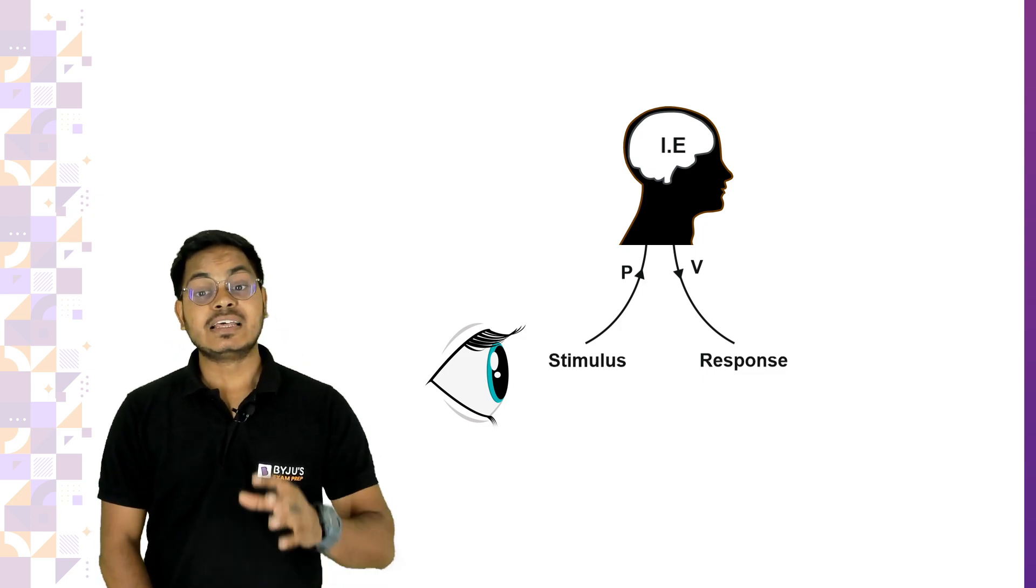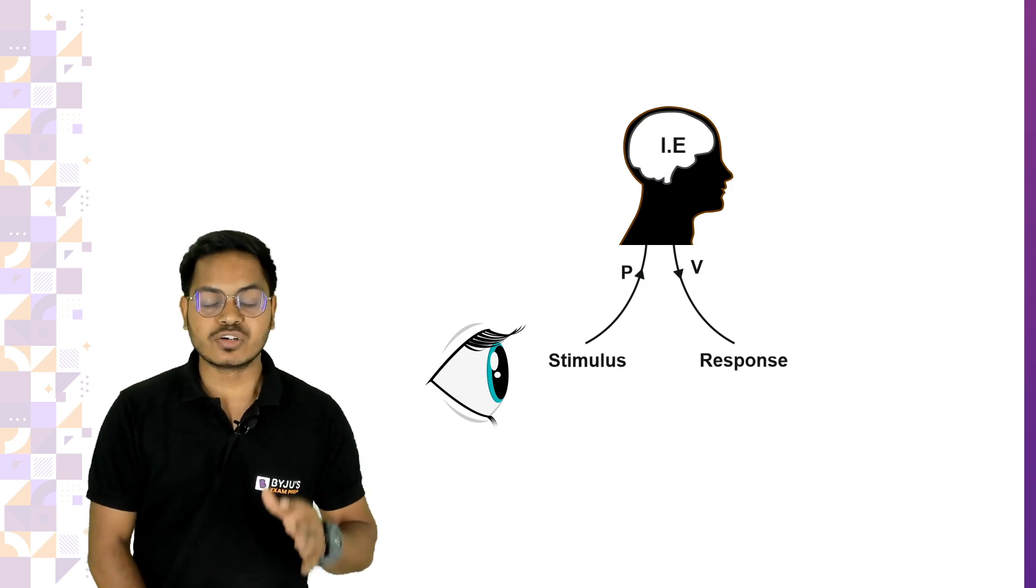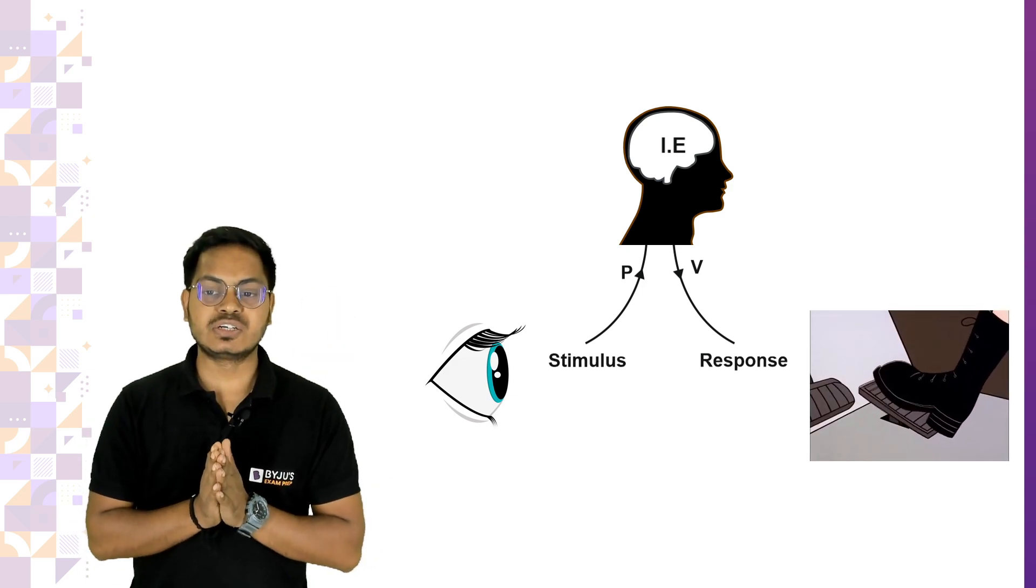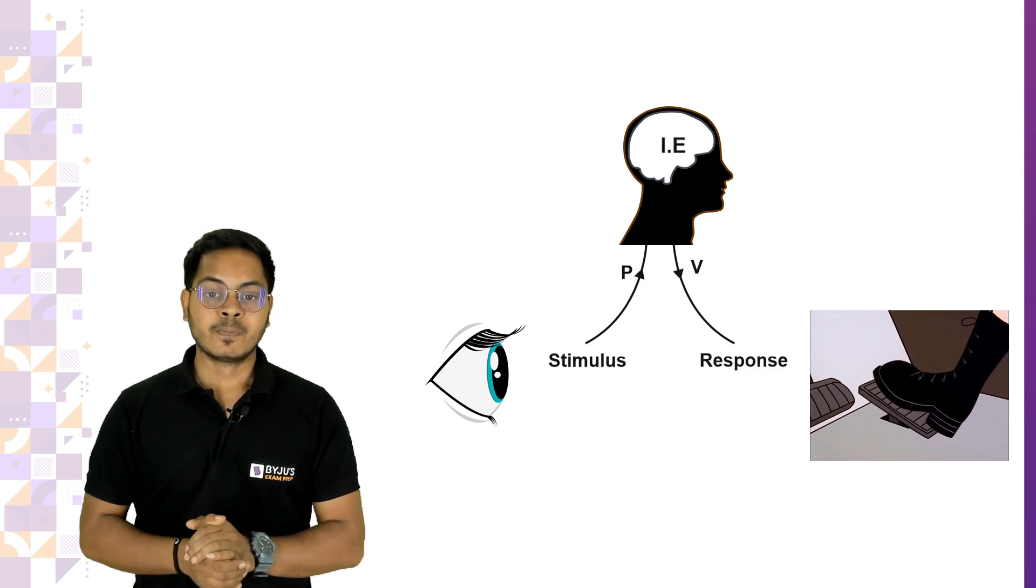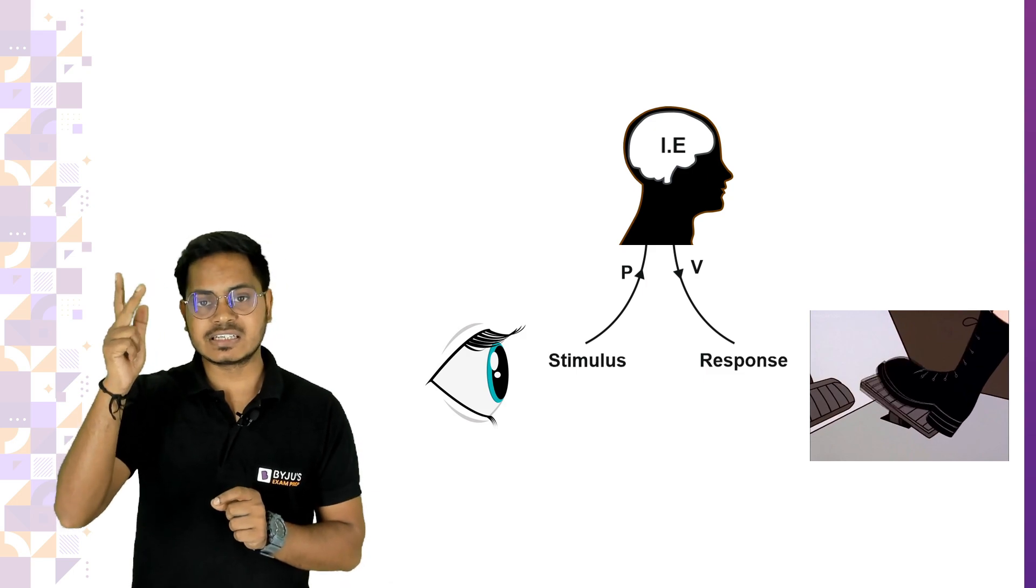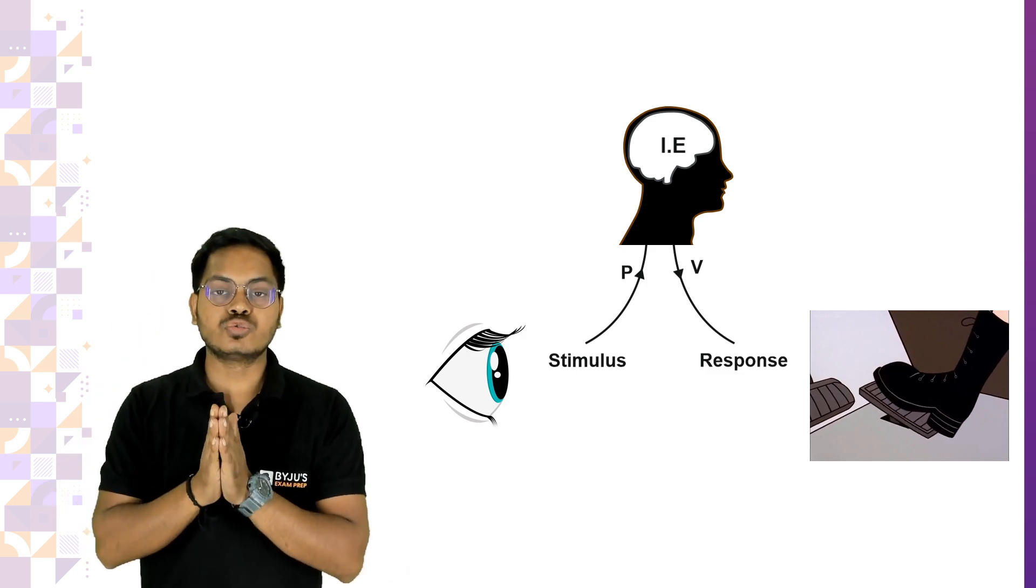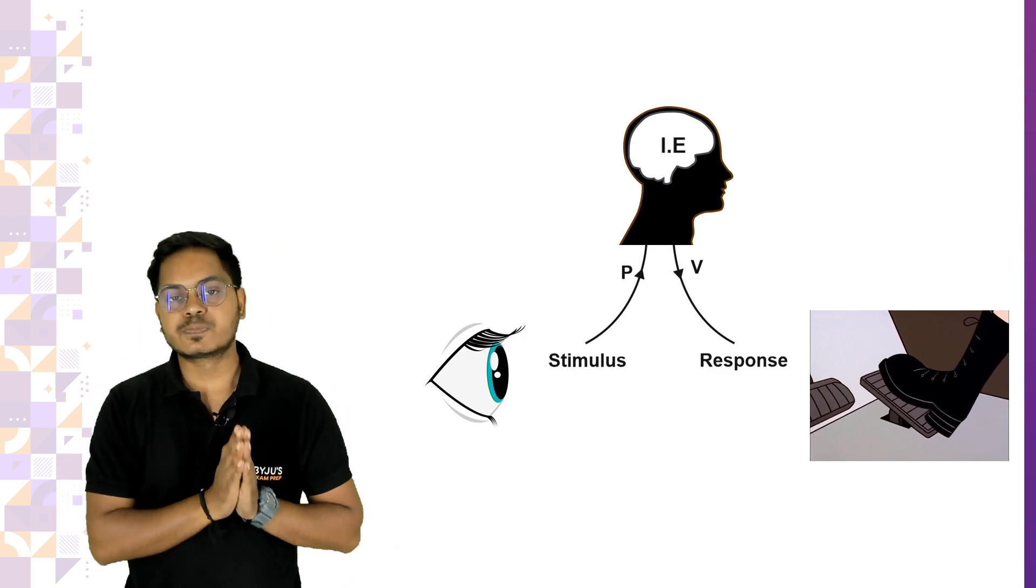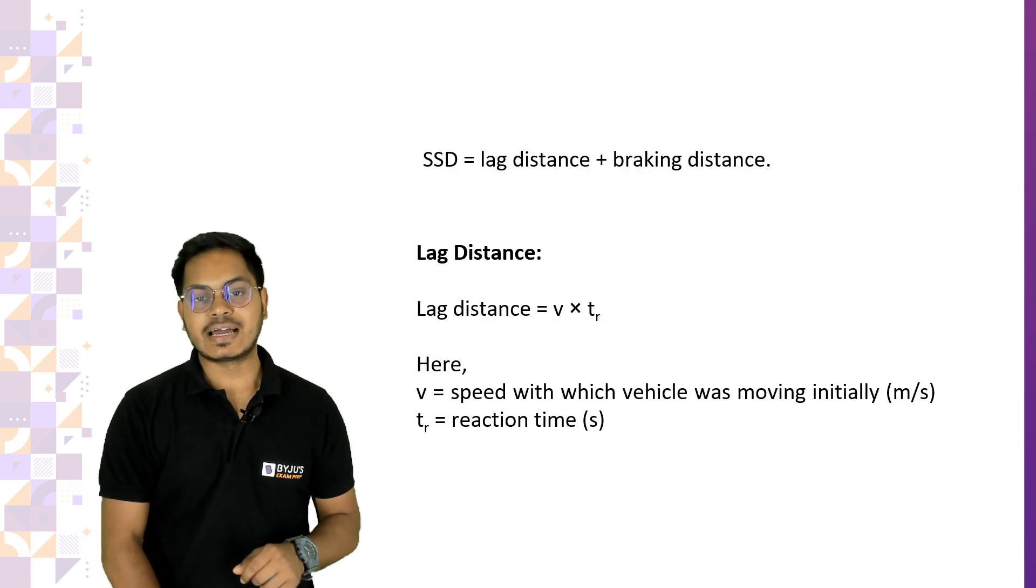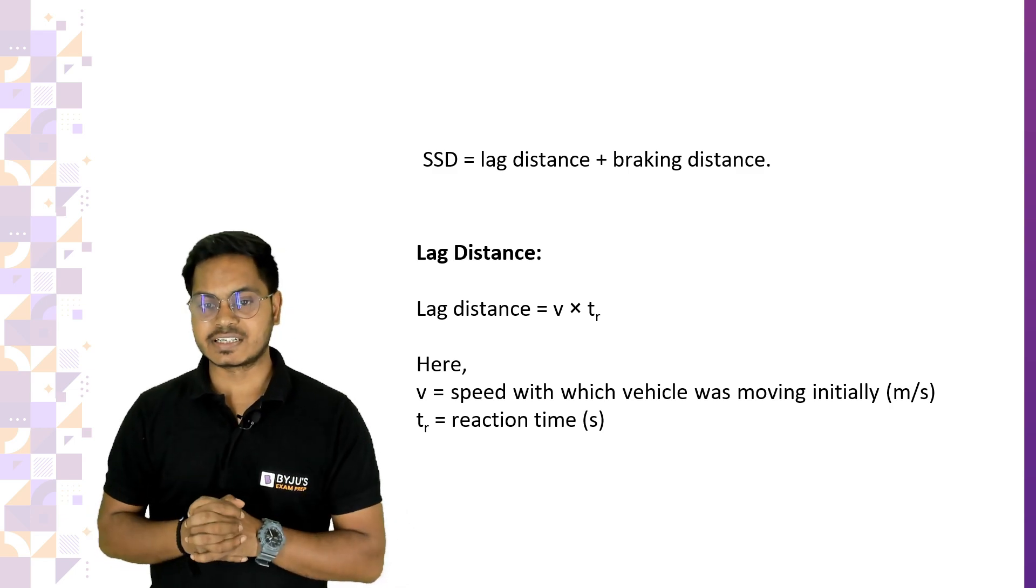then you get emotions around it. Once you get the emotion, you make the decision, yes, I'm going to apply the brake. Then your brain carries out the volition. In volition, the brain gives the signal to the foot to apply the brake. The entire process of PIEV - perception, intellection, emotion, volition - takes around 2.5 seconds as per Indian Road Congress. So if reaction time is not given, you should take it as 2.5 seconds.